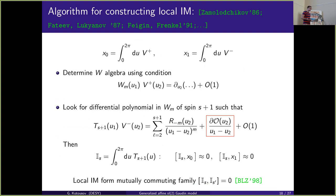The algorithm for constructing local integrals of motion works as follows: starting with the vertex operator V_+, one constructs the W-algebra using the condition that the OPE singular part of V_+ with a local current is a total derivative. Then V_- is used to construct the local integrals of motion — one looks for differential polynomials in W_m such that the OPE residue term is a total derivative. It was later proven that if the I_s commute with the screening charges, they also mutually commute.